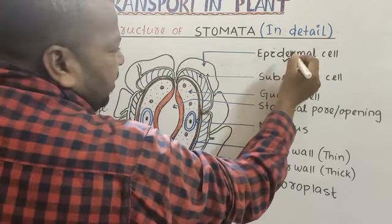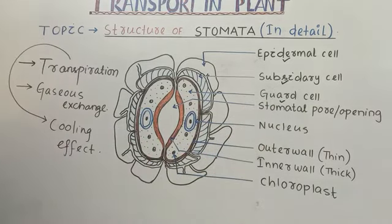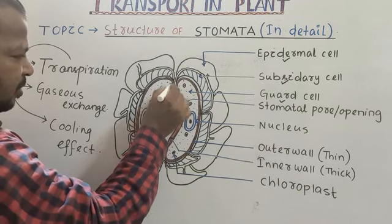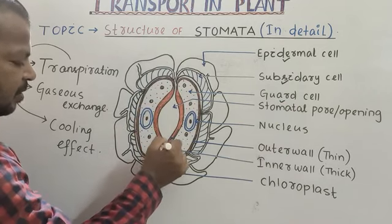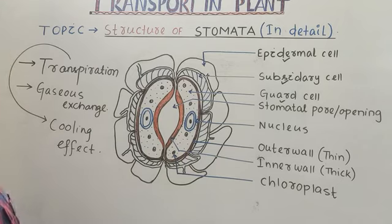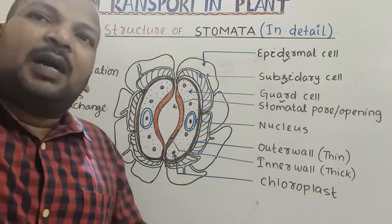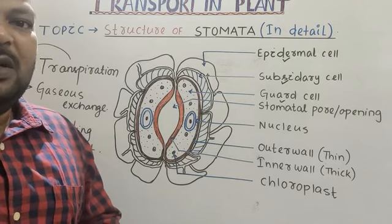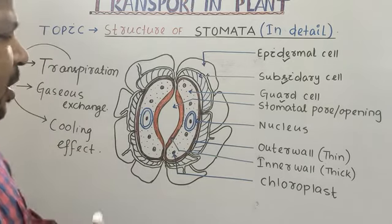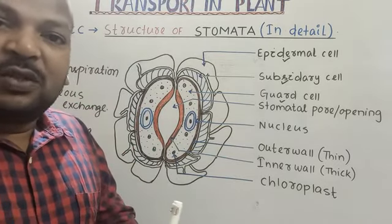The three types of cells are: one is epidermal cell, the second one is subsidiary cell, and the third one is guard cell. These structures are called guard cells — there are two guard cells. Guard cell is the main element of stomata and plays a vital and important role in opening and closing of stomata.